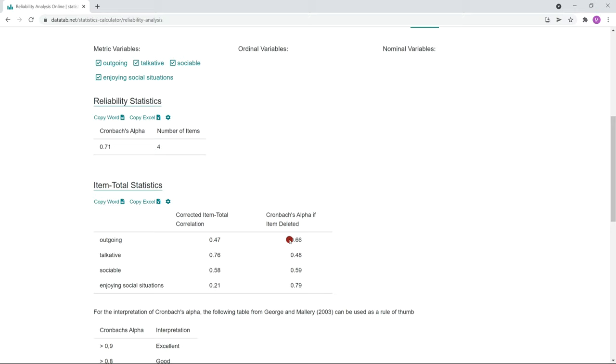Likewise, if we remove the item talkative, we get an alpha of only 0.48. However, if we remove the item enjoying social situations, we get an even higher Cronbach's alpha. So our Cronbach's alpha then would be 0.79. In this case, one could consider removing the item enjoying social situations.